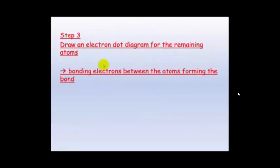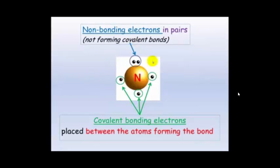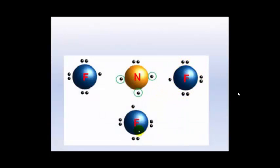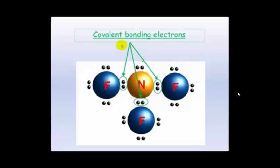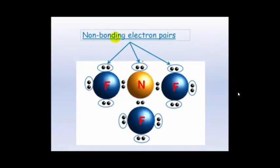Step 3 is to draw the electron dot diagram for the remainder of the atoms, making sure that those bonding electrons are between the atoms forming the bond. We're going to place these covalent electrons between the other atoms. If we put the other fluorines in with their valence electrons — which is 7 for each fluorine — we can now see these are the covalently bonding electrons for nitrogen, and the covalently bonding electrons for fluorine. Each fluorine only needs to share 1 electron. These are the covalent bonded electrons in between the nitrogen and the fluorine, and all of these other ones will be the lone pairs, or the non-bonding electron pairs.